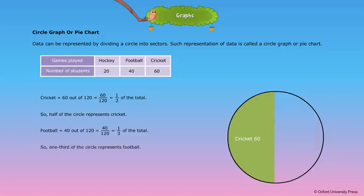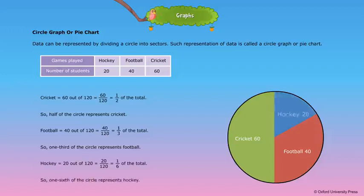So, one third of the circle represents football. Hockey is equal to 20 out of 120 is equal to 20 divided by 120 is equal to 1 by 6 of the total. So, one sixth of the circle represents hockey.